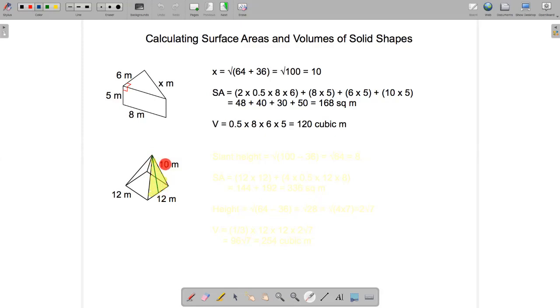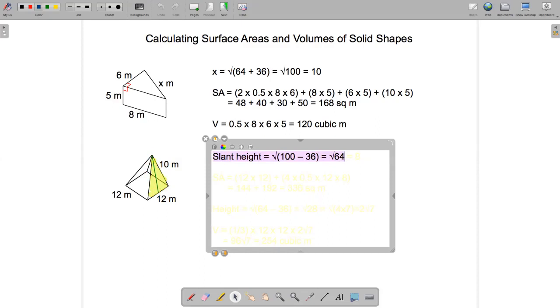So the slant height squared plus 6 squared is equal to 10 squared. If I rearrange that, the slant height squared is equal to 10 squared minus 6 squared. So in other words the slant height is the square root of 10 squared minus 6 squared which is the square root of 100 minus 36, which is 64, which is a nice perfect square. The square root of that is 8.